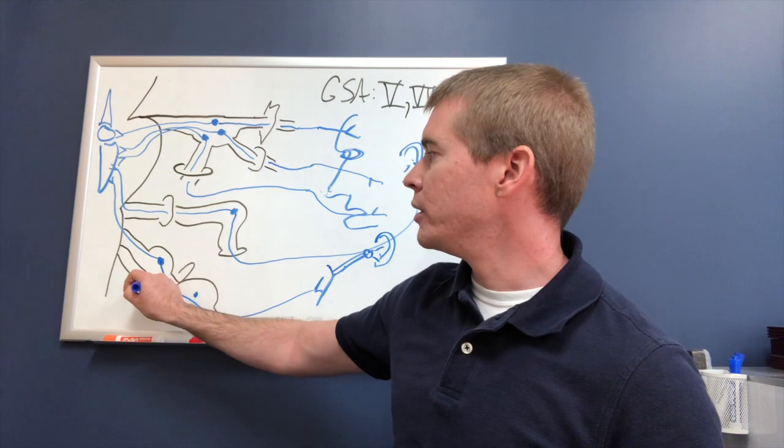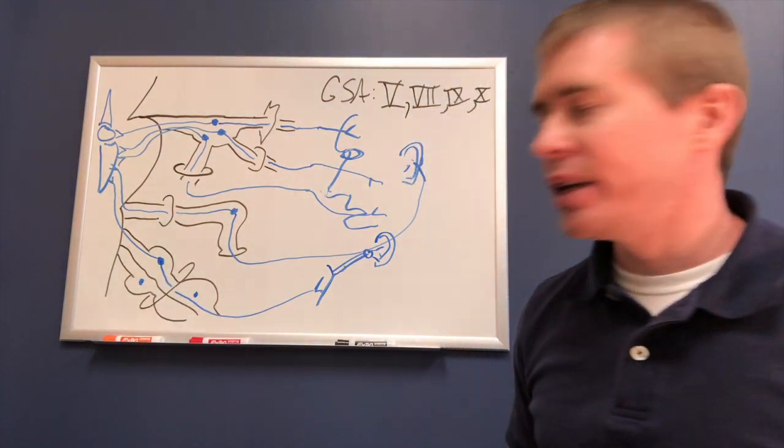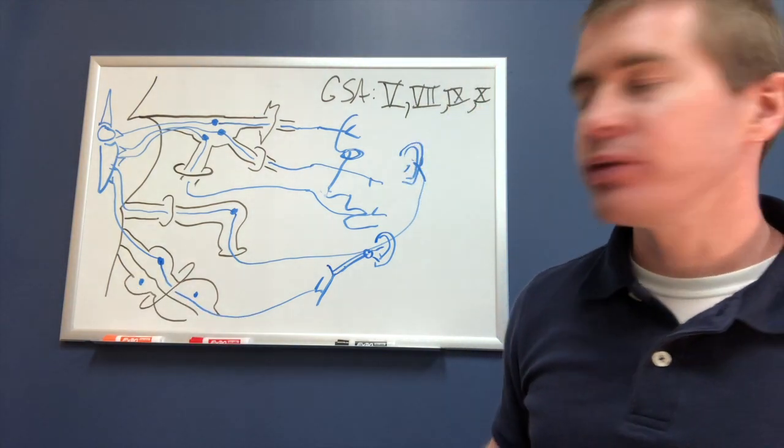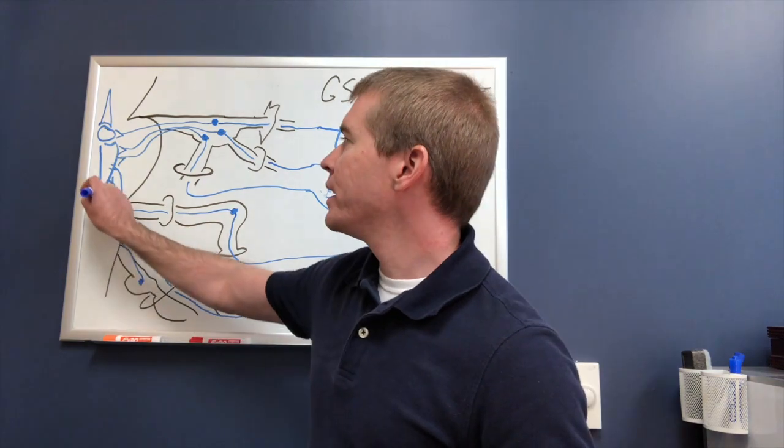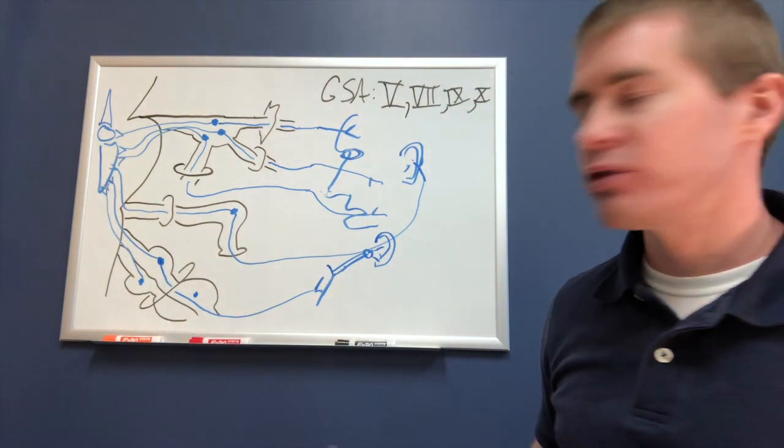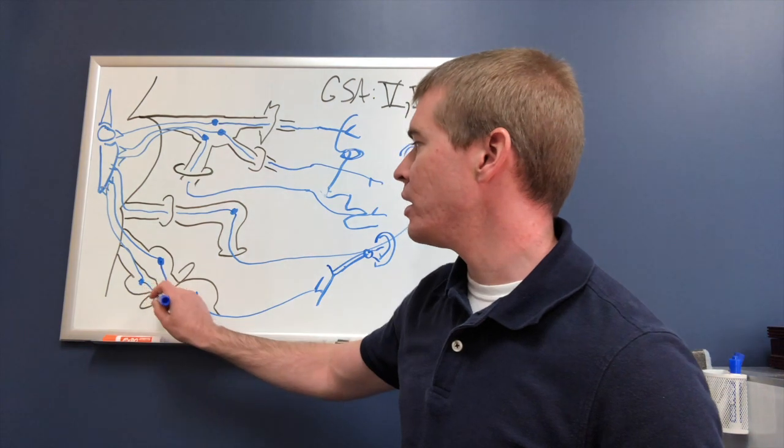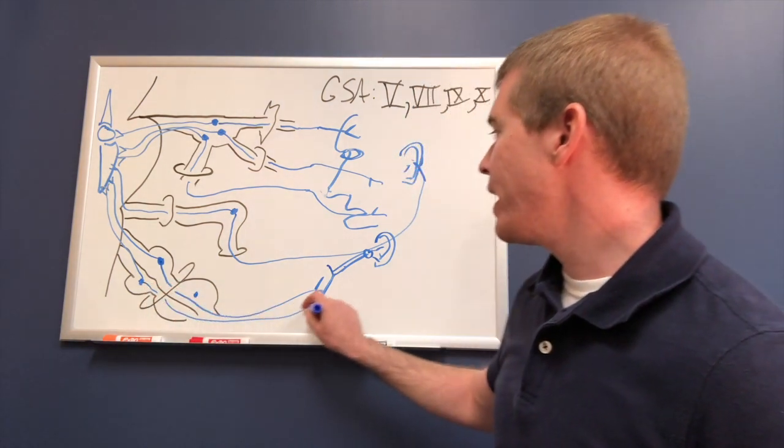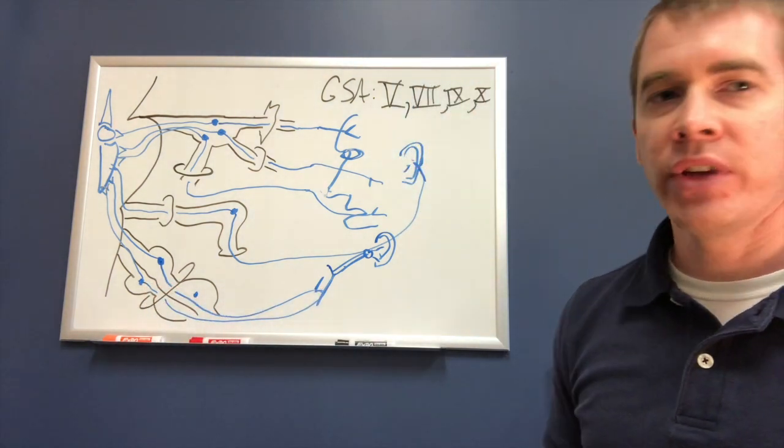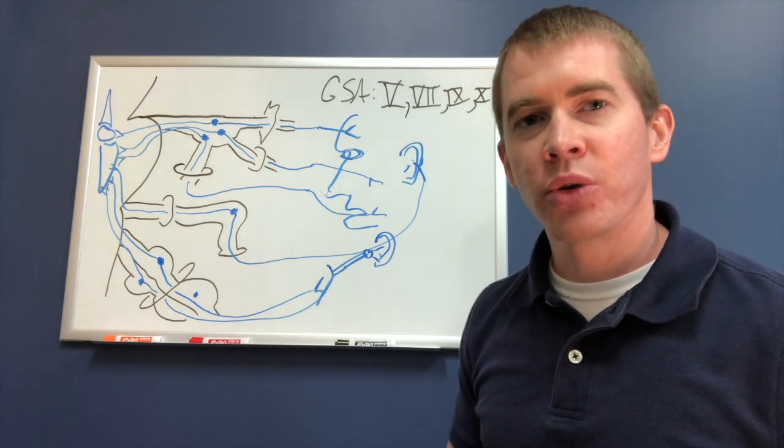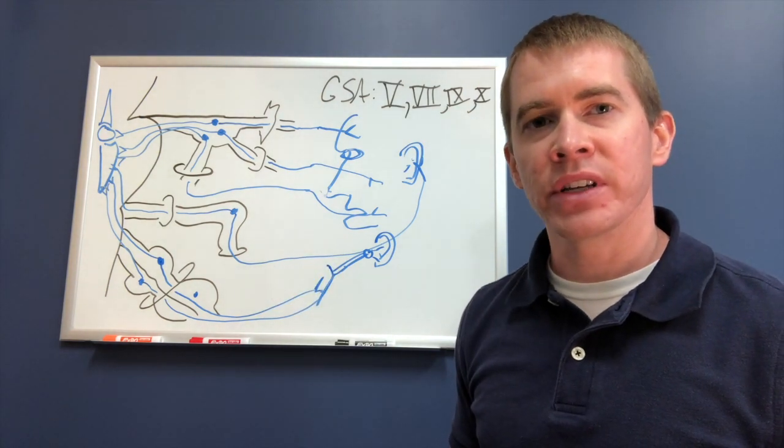The vagus nerve, all of these are going to the sensory trigeminal nuclei. This vagus nerve travels out, and it also helps to innervate these internal portions of the pharynx and larynx.